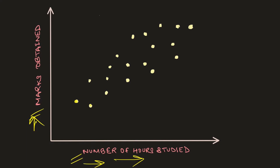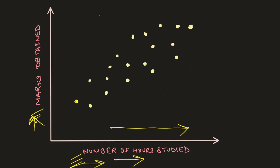We can also see that between these two variables there is a linear relationship. If we observe carefully, as the number of hours studied increases, the marks obtained by a student also increases, indicating a linear relationship between the independent and the dependent variable. This linear relationship is one of the assumptions we hold before using a linear regression algorithm.